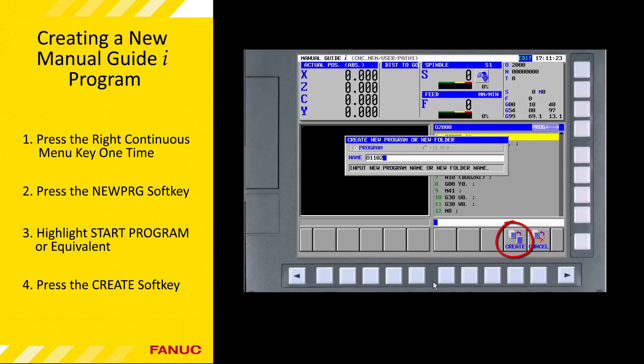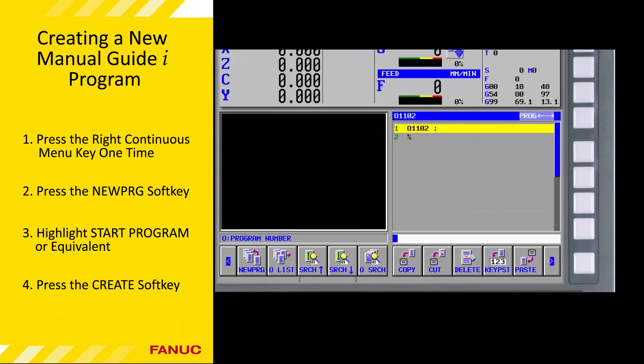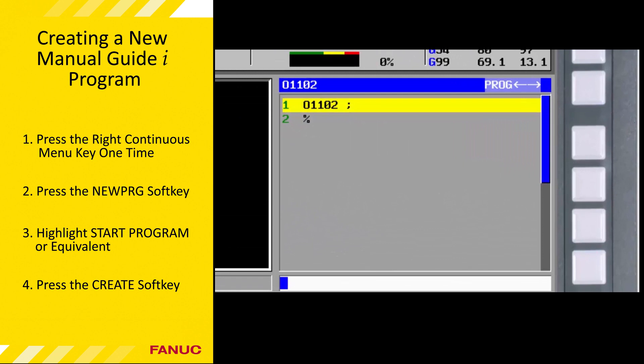To create a program using the traditional O number, enter the letter O followed by a four-digit number, then press the Create soft key. The program created begins with the O number followed by a semicolon. The semicolon is a symbol for end of block, which separates individual CNC blocks or commands. The program ends with the percent symbol, which is the end-of-file marker for the program.